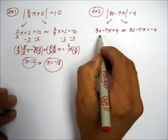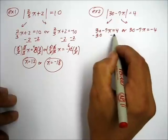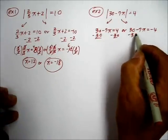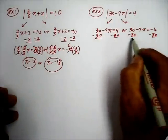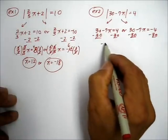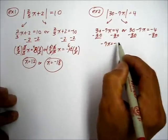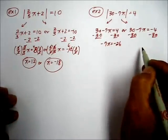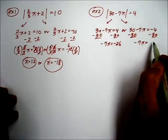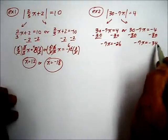To start solving for x, we're going to get rid of the constant 30 by subtracting 30 from both sides of the equation, and do that to this one as well. On the first equation you get -7x on the left side, and that equals -26. Here you get -7x on the left side, but this one becomes -34.